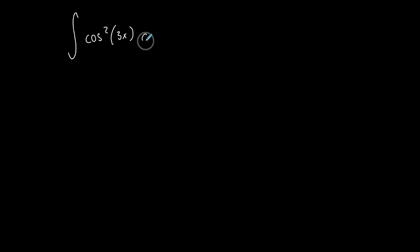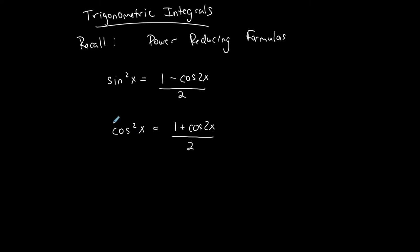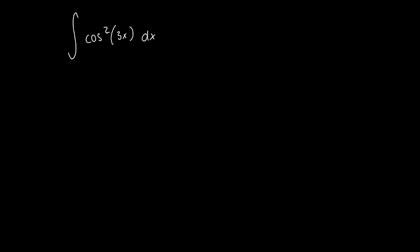First example: the integral of cosine squared of 3x dx. Looking at this, it's not a basic u-substitution — I don't have sine of x to do u-sub. And I'm not going to use the methods from my last video with trigonometric integration, because I don't have an odd degree for cosine. So I'll use the power reducing formula: cosine squared of an angle equals 1 plus cosine of twice the angle, all over 2. With 3x as the angle, that gives 1 plus cosine of 6x, all over 2, dx.